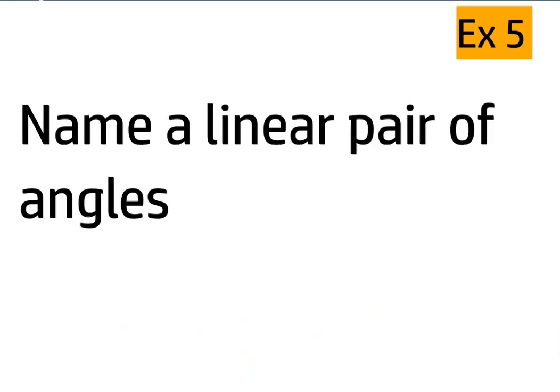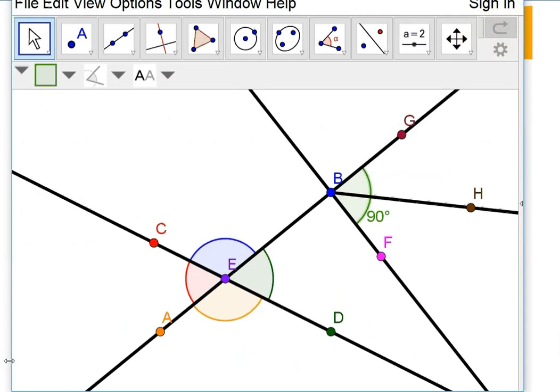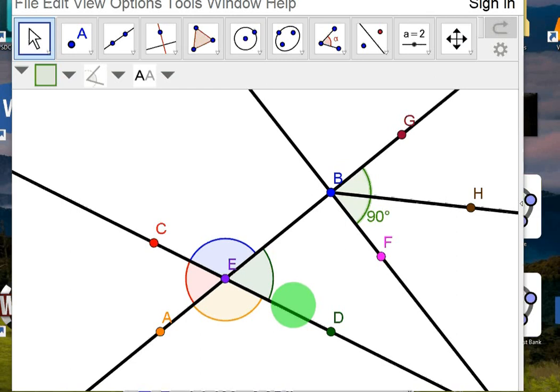A few more questions to answer. Name a linear pair of angles. Linear pair means it forms 180 degrees. So, looking at this, there's a lot of different possibilities. But you have to find two angles that form 180 degrees. That's what a linear pair is. I would say CEB and DEB. If you add up this green and this blue angle, that's going to form a straight line. So, CEB and DEB. Certainly, there are many more examples. CEB and DEB is going to be mine.